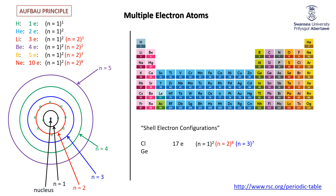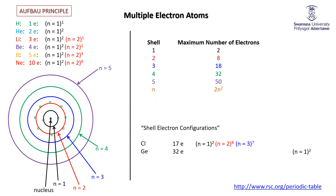Let's try germanium — 32 electrons. Two go in the first shell, eight in the second shell, that's ten, leaving 22. The third shell can hold 18, so we fill it completely. That's 10 plus 18 equals 28, leaving four electrons. Those four go into the fourth shell. Germanium's configuration: two, eight, 18, four. We won't focus on this too much because the model doesn't work very well for higher atoms, but it gives a good rough feel and is the GCSE-level picture of atomic structure.